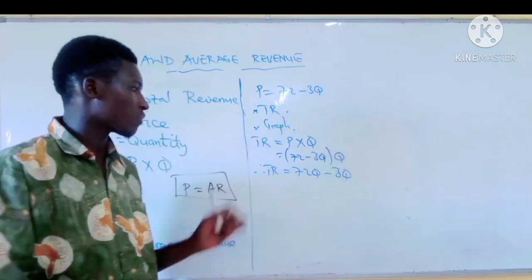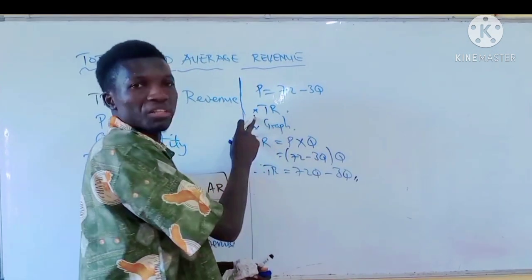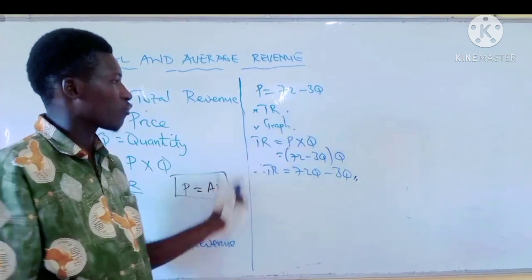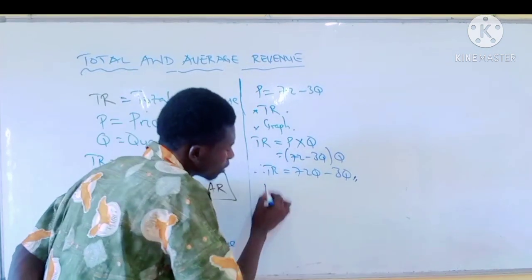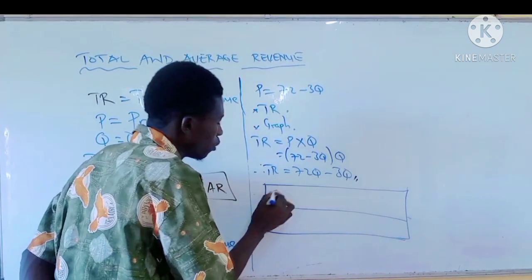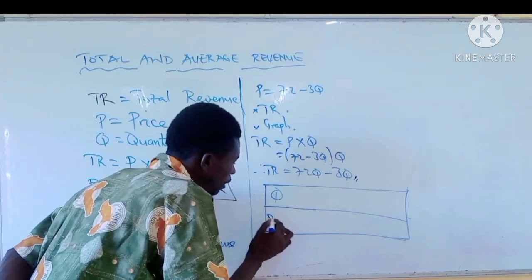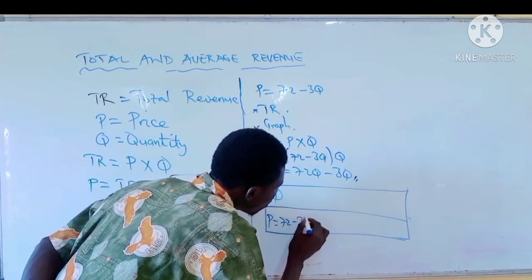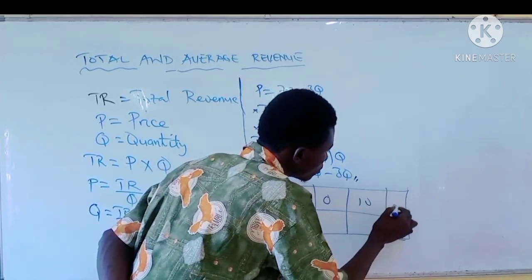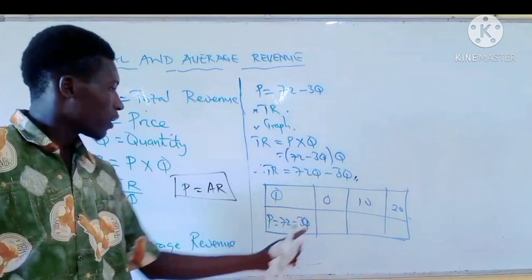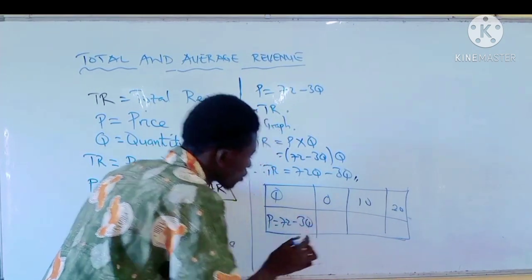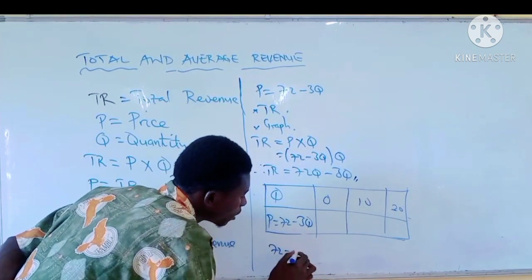After finding our total revenue — TR equals 72Q minus 3Q squared — we now plot a graph using the price equation P equals 72 minus 3Q. The values of Q we use are 0, 10, and 20. When Q equals 0: 3 times 0 is 0, so 72 minus 0 gives P equals 72. When Q equals 10: 3 times 10 is 30, so 72 minus 30 gives P equals 42.